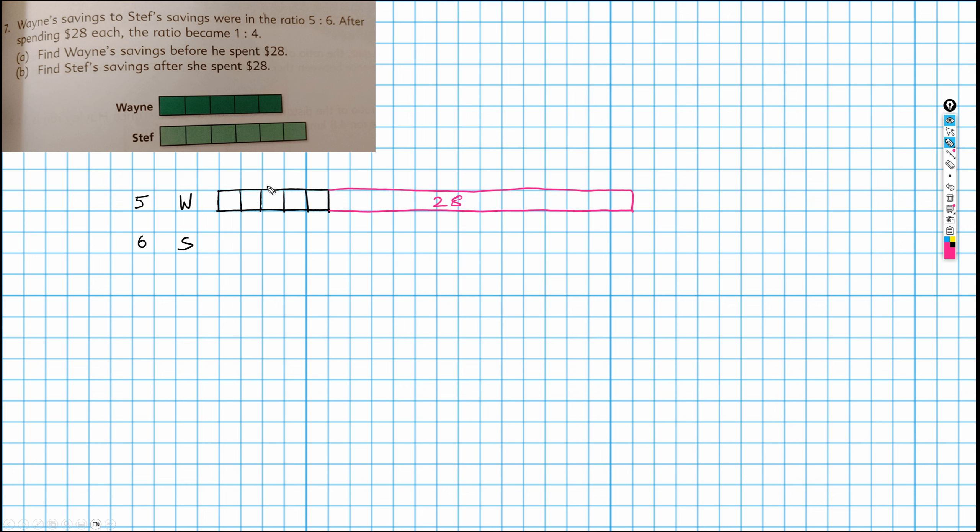So if Wayne has this and the ratio is 5 to 6, that means that Steph must have 6 of these parts. For every 5 that Wayne has, Steph has 6. And she also has, I know that both spent $28, so don't get distracted by that. But if this is true, we've split this part of what Wayne has into parts, so there's 5 parts here and 6 parts here. We must also split this into 5.